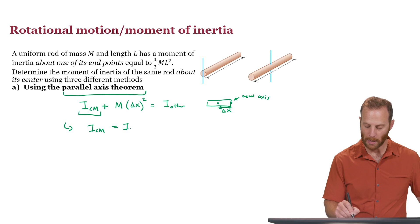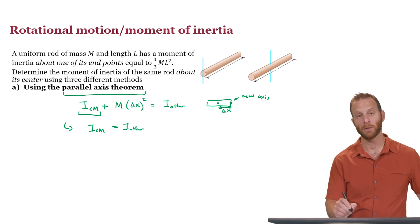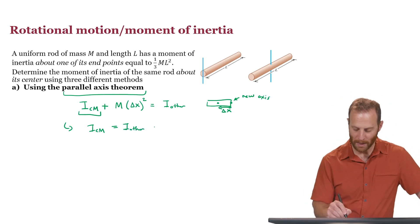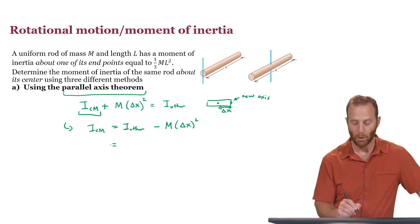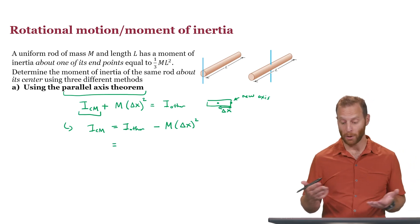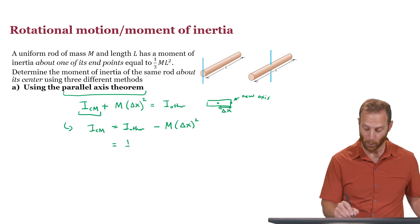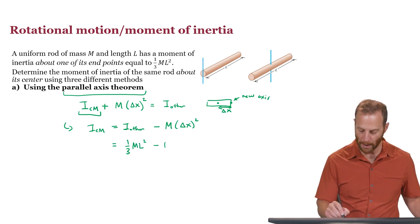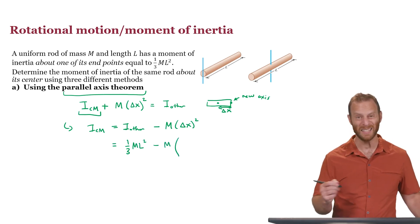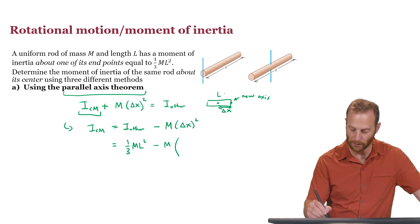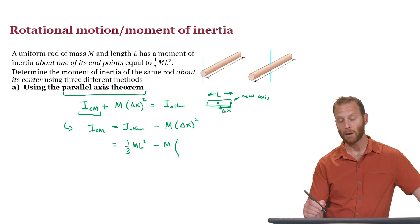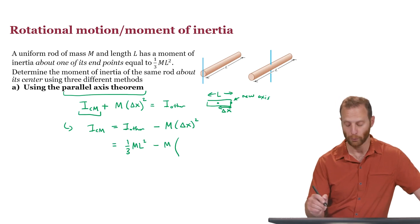So let's rearrange this and solve for moment of inertia, center of mass, is equal to i other, that is to say the moment of inertia about the endpoint, and we'll subtract off the mass times the amount that we have been displaced. So i other, that's the moment of inertia about the endpoint. That is what we're told, one-third ml squared. We can subtract off the mass and the amount, the distance that we have displaced. Well, if this length is l, the full length of the rod, then the amount of distance that I've displaced is l over 2.